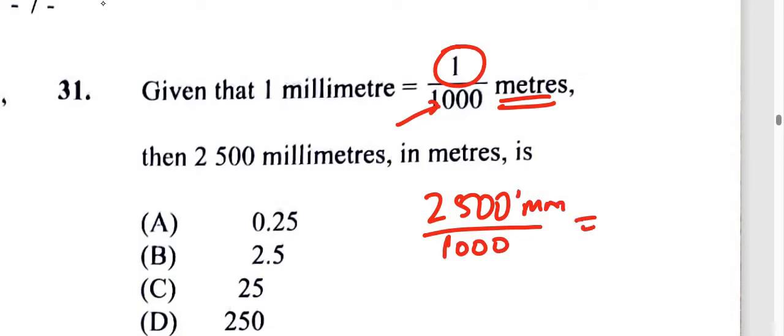So it's going to be equal to one. Well, to divide by a thousand, move three places to the left, right? One, two, three, and that would be 2.5. And that would be in meters. That's the answer, B.